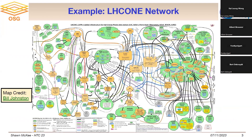I always like to show this diagram — this is the LHC1 network, actually just a subset of the world's R&E networks, which we use for high energy physics. This is how we communicate, and you can see the spaghetti here. That's the reason why the telescope people ship tapes. Credit goes to Bill Johnston, who continues to maintain this. The link on his name takes you to a presentation explaining how to interpret all the symbols on it.